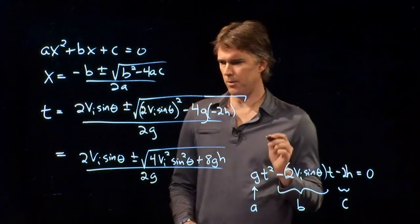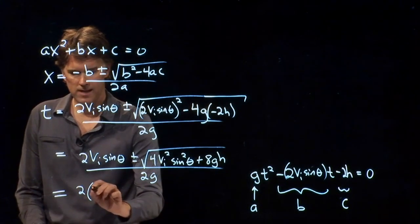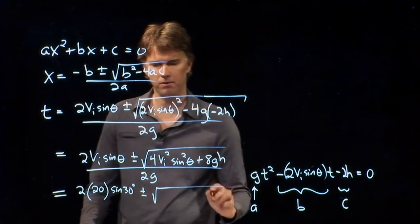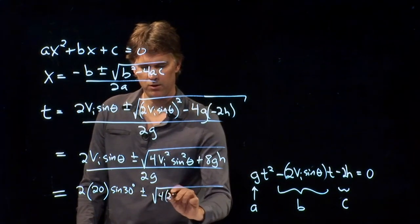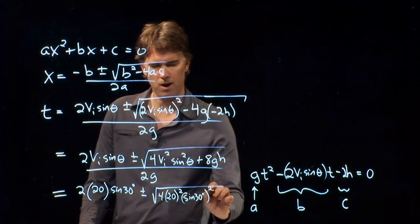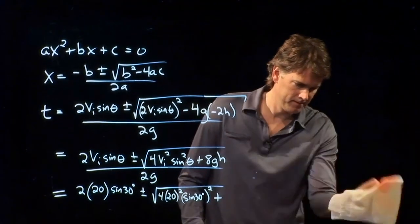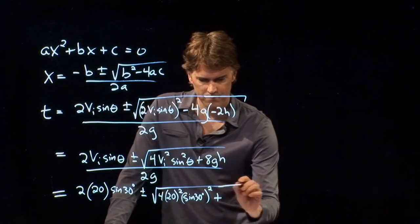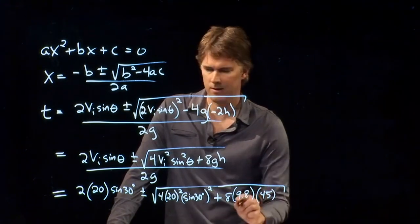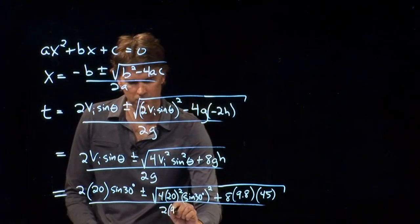4 times A is G. C is negative 2H. And now all of this is over 2A, which is 2G. And we can just rewrite this again: 2VI sine theta plus minus the square root of 4VI squared sine squared theta plus 8GH, and all of that over 2G.